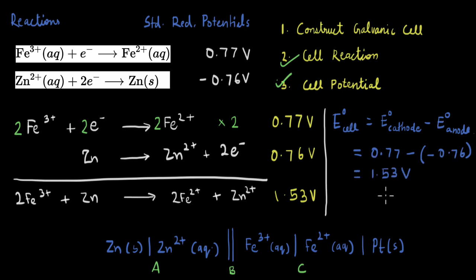So if we calculate this, we get 1.53 volts, which is the same that we got from this method. And so we have the cell reaction, the cell potential, and this is the galvanic cell.